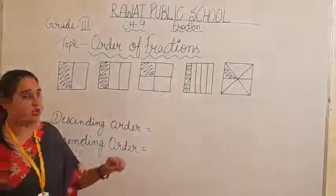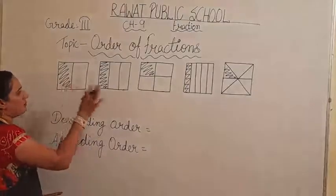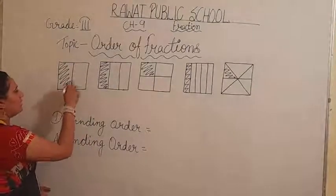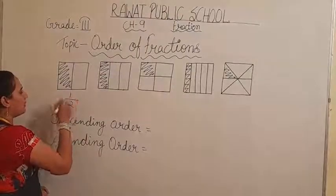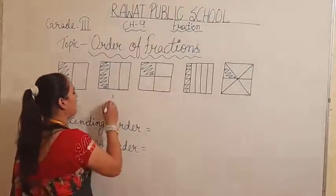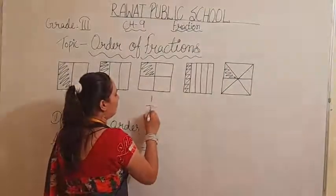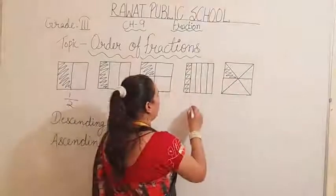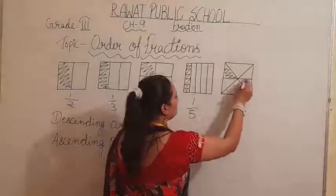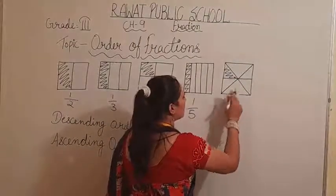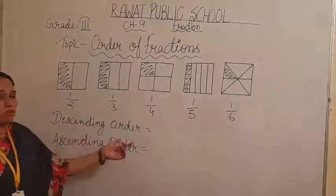First of all, let's talk about the pictures on the screen or in our book. This fraction set starts with 1 upon 2, then 1 upon 3, 1 upon 4, 1 upon 5, and 1 upon 6. Now let's talk about the descending order first.